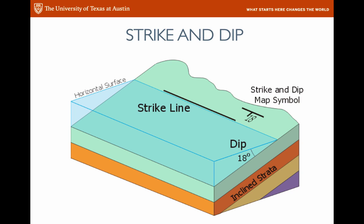Let's start with dip, because that's the easiest to get a handle on at first. In this block diagram we have some tilted layers called inclined strata, and the dip is defined as 18 degrees in this case. The diagram has been filled with water so you can see what a horizontal plane looks like, and the dip is measured from the horizontal to the inclined bed — 18 degrees. A horizontal bed has a zero dip; a vertical bed has a 90 degree dip.